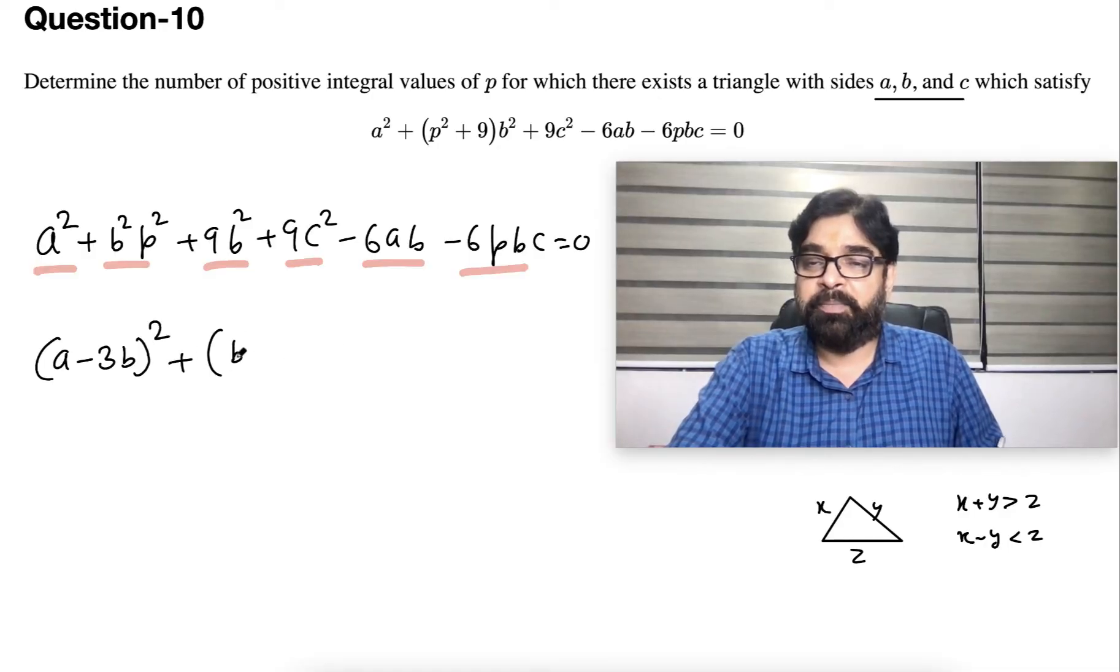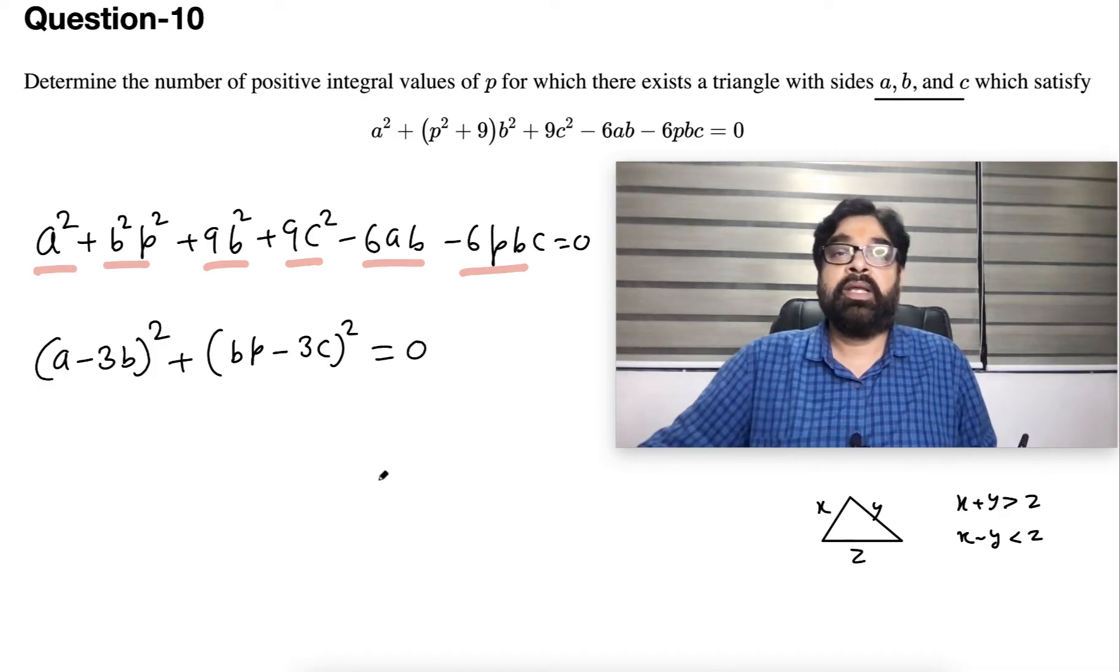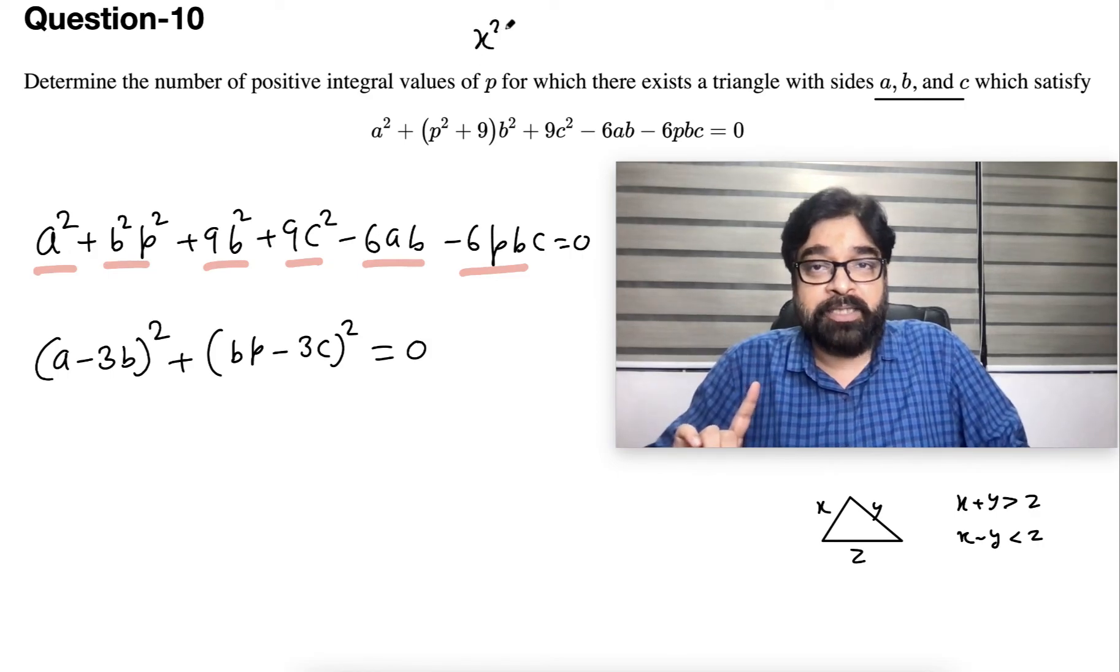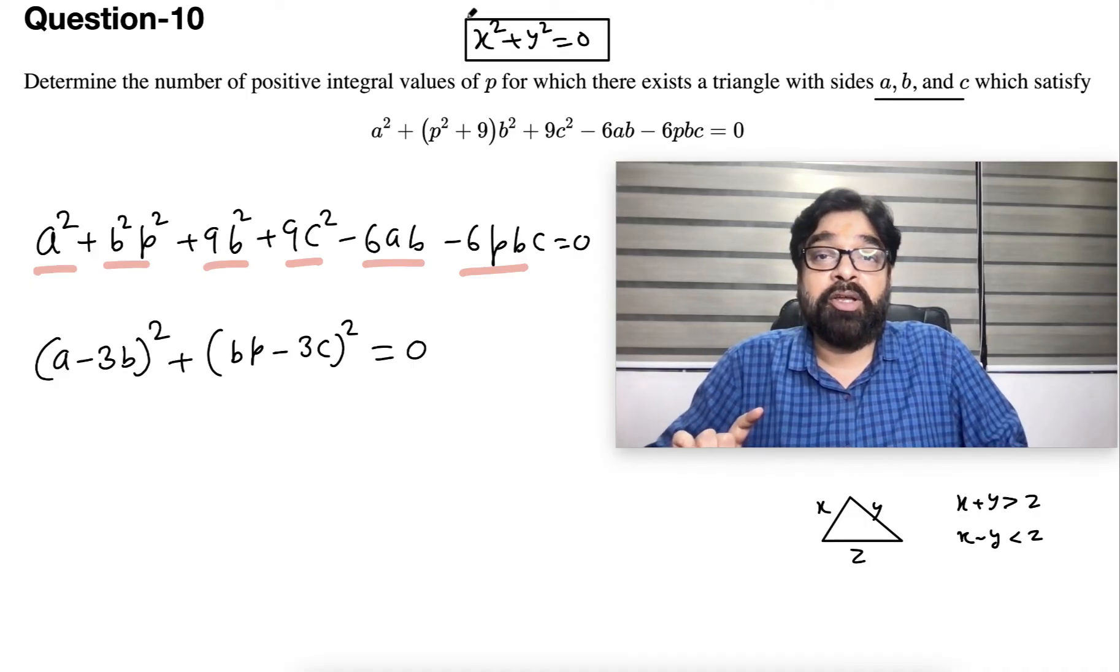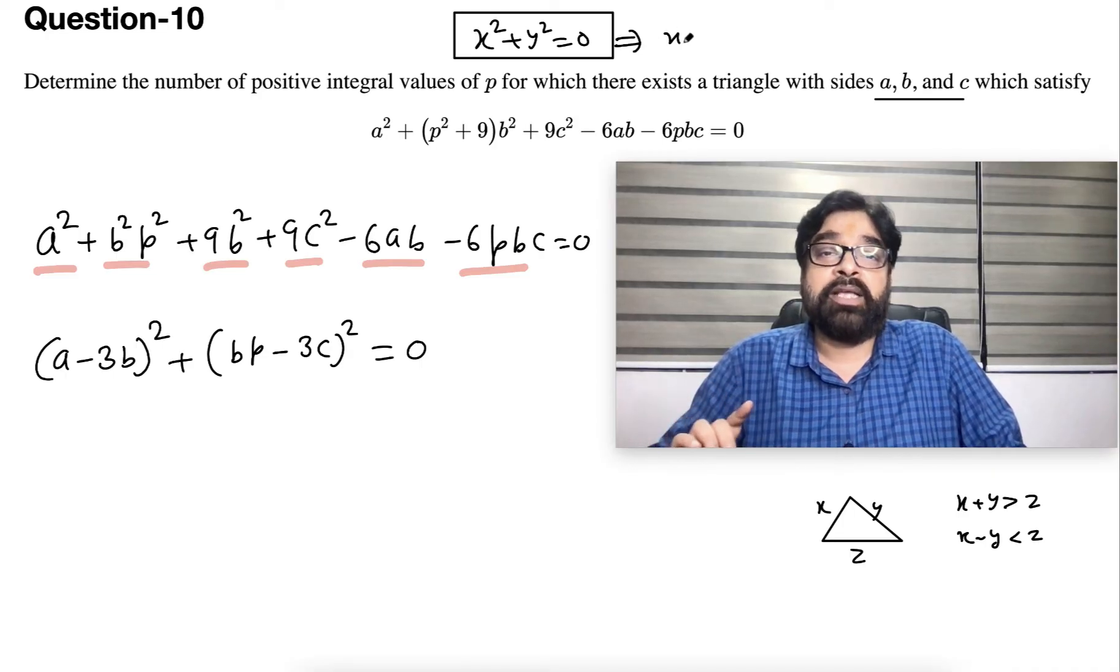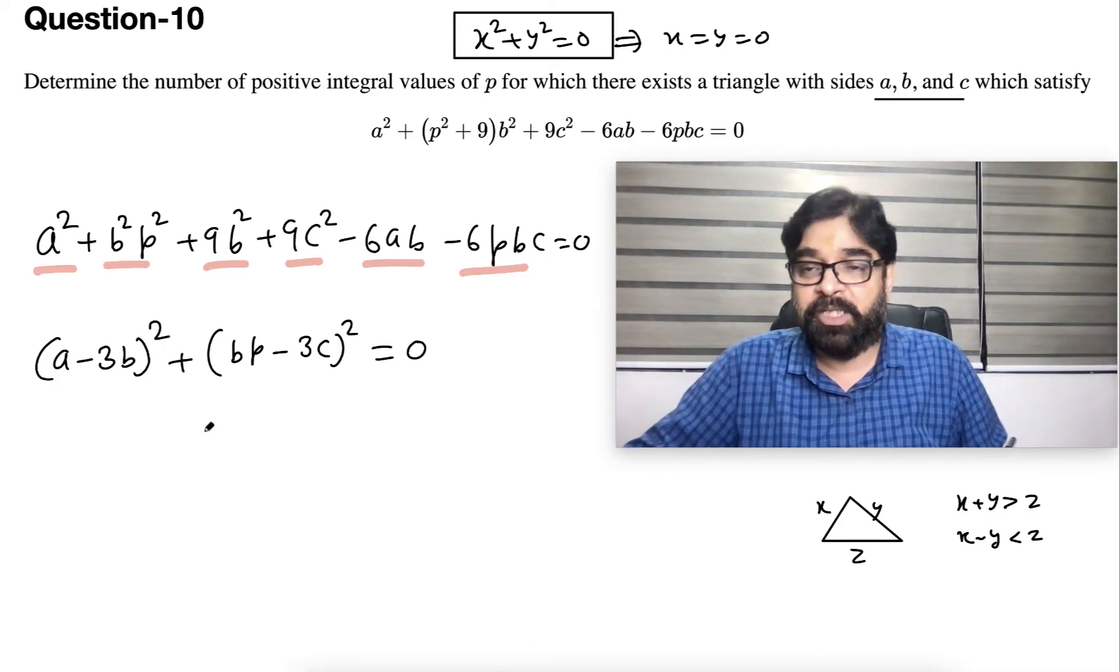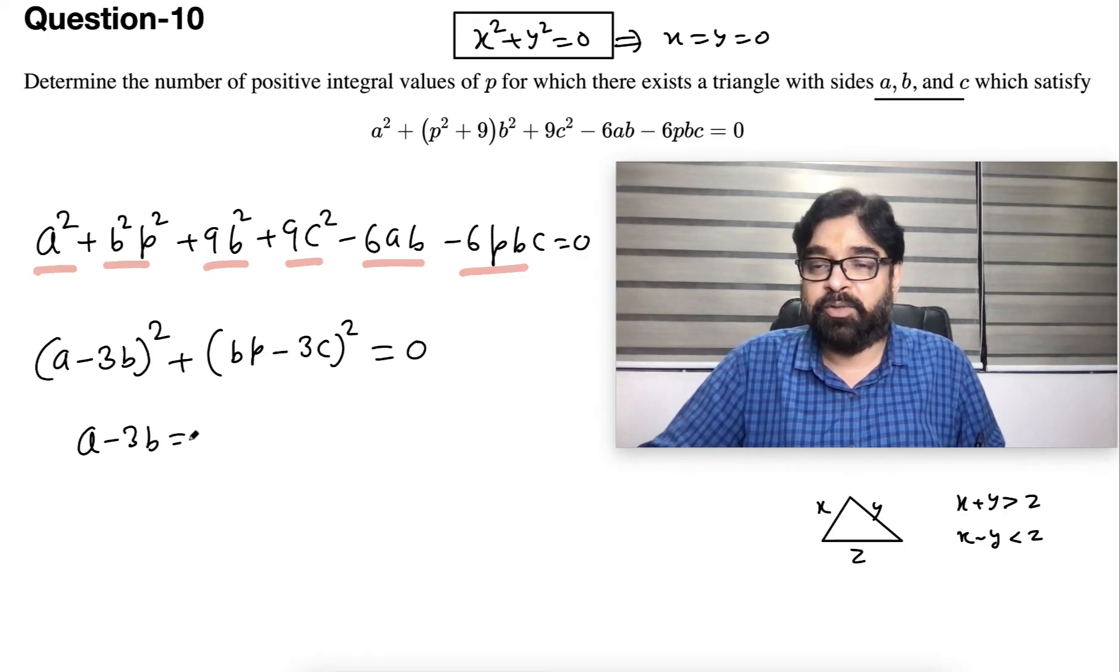Very simple - sum of two squares equals 0. This is x² + y² = 0. If x and y are real, then this always gives you x = y = 0. Both have to be 0, then only it can be 0. Same logic I can apply. So this has to be 0, means a - 3b = 0.